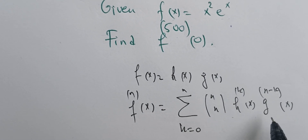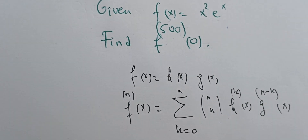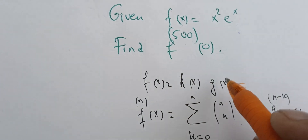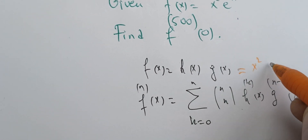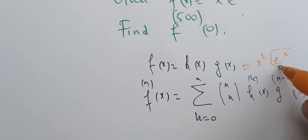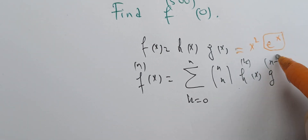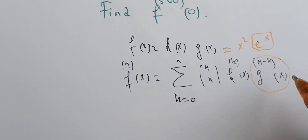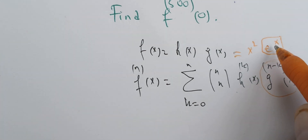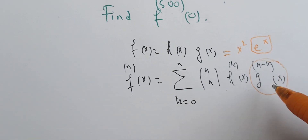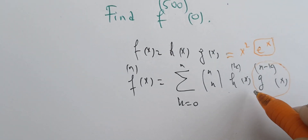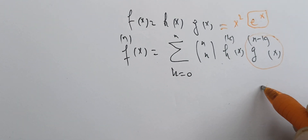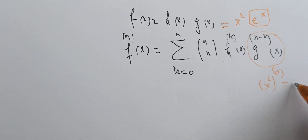In our case, we can simplify this formula. We take h(x) = x² and g(x) = eˣ. A key observation is that the derivative of the exponential is itself, so no matter how many times we differentiate eˣ, it remains eˣ. Also, if we differentiate x² zero times, it stays x².